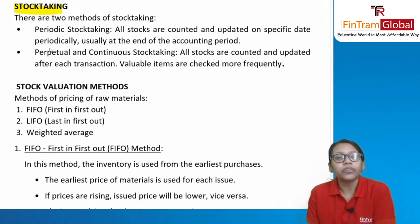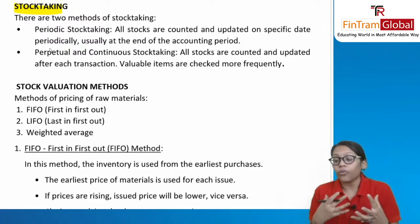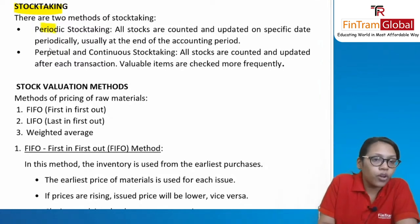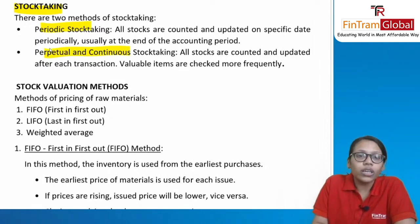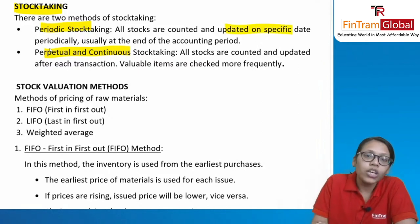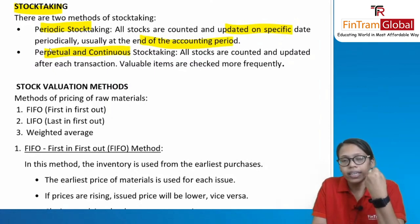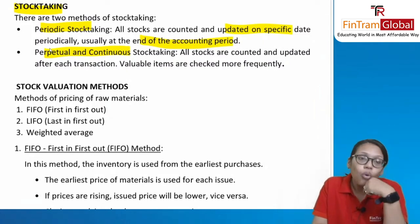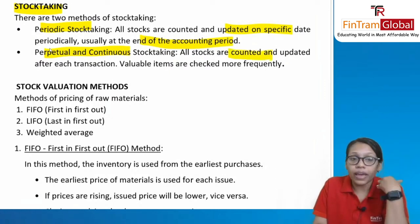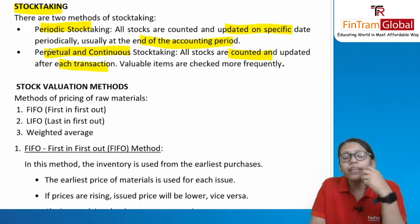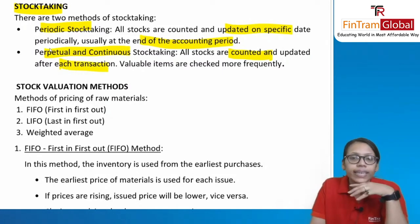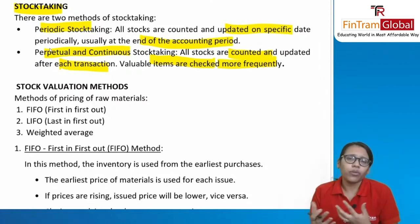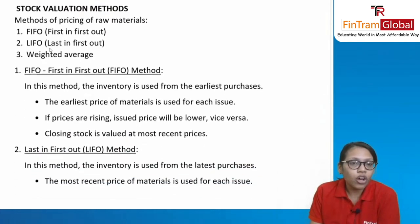Stock taking means measuring physical stock and comparing it with the books of accounts. In periodical stock taking, stocks are counted on a specific date, usually at the end of the accounting period. In perpetual (continuous) stock taking, stock is counted and updated every time a transaction occurs. Valuable items should be checked more frequently using continuous stock taking; items of less value can use periodical stock taking.